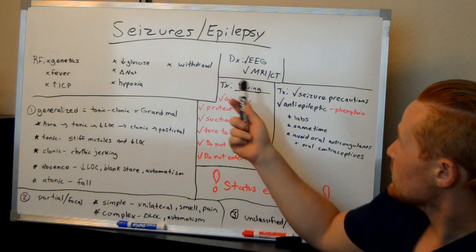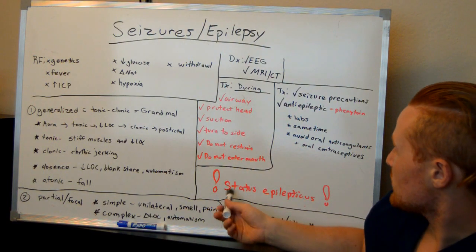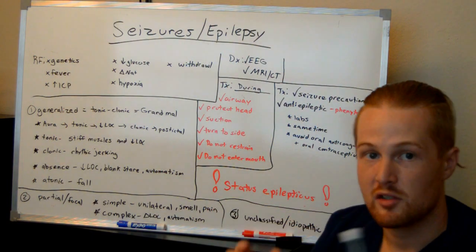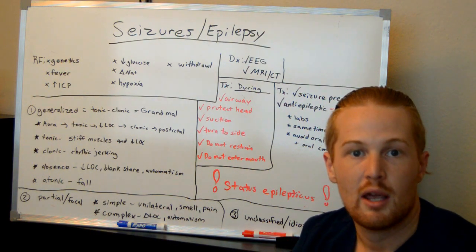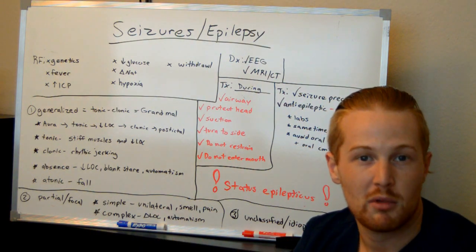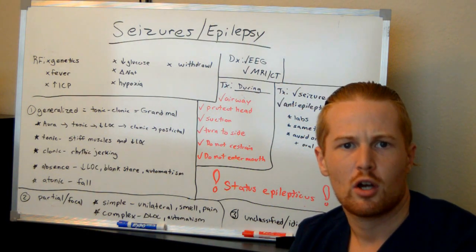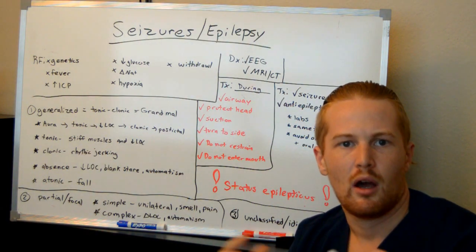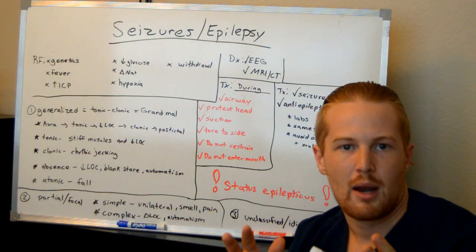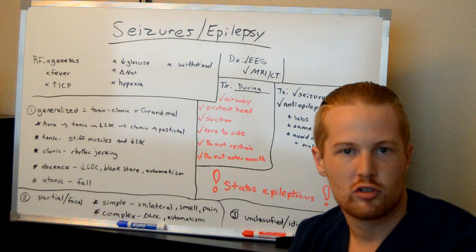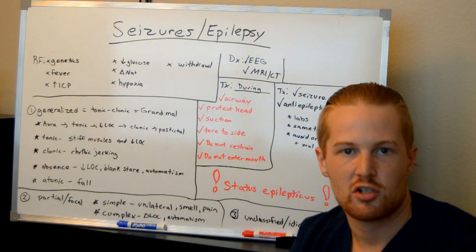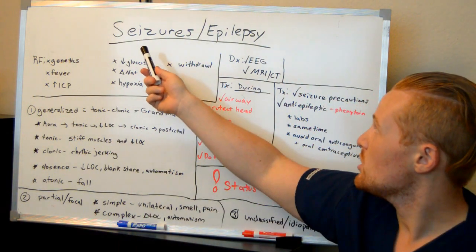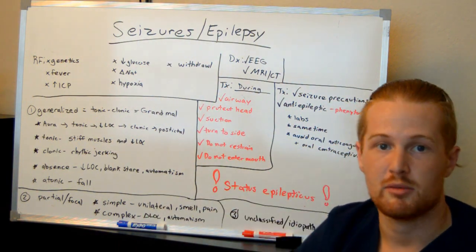Status epilepticus is the severe case — seizure after seizure after seizure. This is typically when you'd call a rapid response code; ICU nurses and doctors come in because it is an emergent situation. This concludes the overview of seizures and epilepsy.